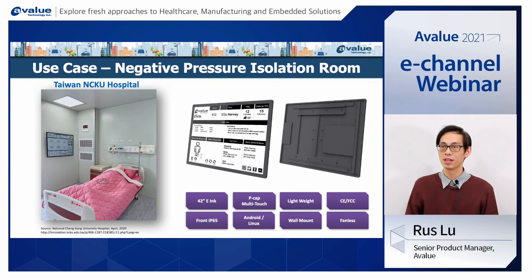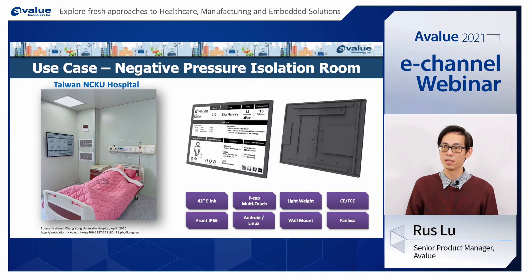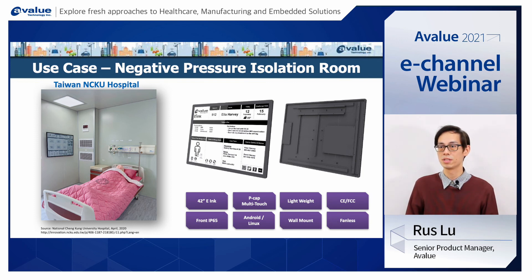I would like to share with you a real use case in Taiwan: how Avalu's e-ink digital paper solution can be quickly implemented in a hospital. As you can see on the screen, there is a negative pressure isolation room in NCKU Hospital, which is a major hospital in Taiwan. You can see the 42-inch digital paper communication board mounted on the wall. It is quite slim, not occupying too much space, and fits well in the patient's room. During the COVID-19 period, many newly built negative pressure rooms were constructed in a very short time, so the infrastructure is quite simple — just walls and electricity.